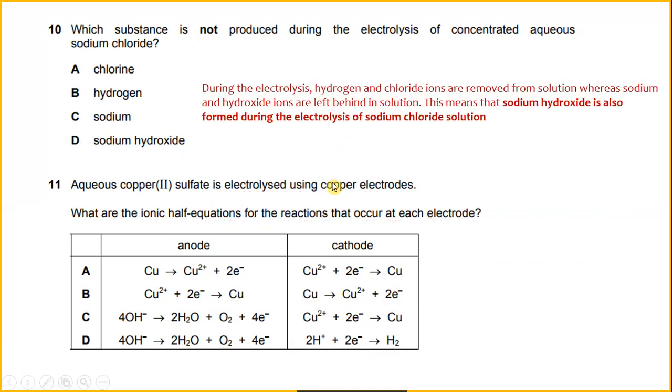Which substance is not produced during the electrolysis of concentrated aqueous sodium chloride? During the electrolysis, hydrogen and chloride ions are removed from solution, whereas sodium and hydroxide ions are left behind in solution. And this means that sodium hydroxide is also formed during the electrolysis of sodium chloride solution. So now the question asks, which substance is not produced during electrolysis? If you look here, they produce chlorine, they produce hydrogen, and also sodium hydroxide. Which are not produced, it would be sodium.